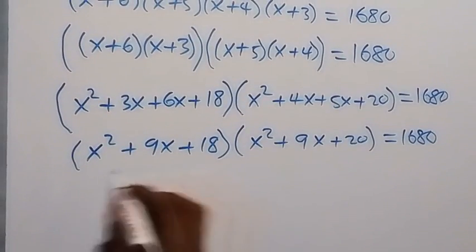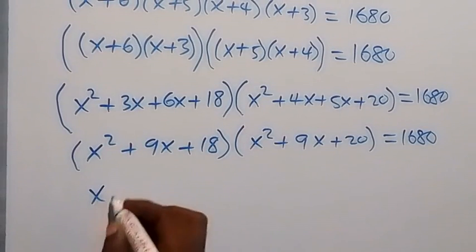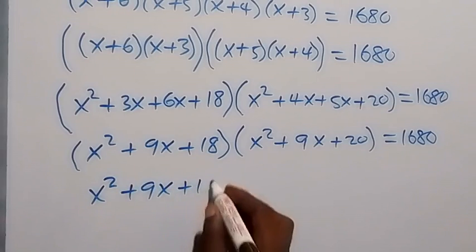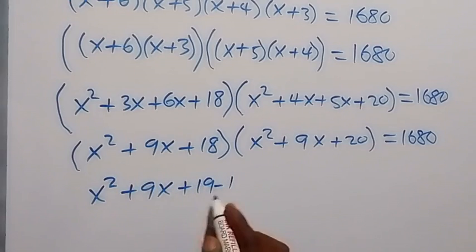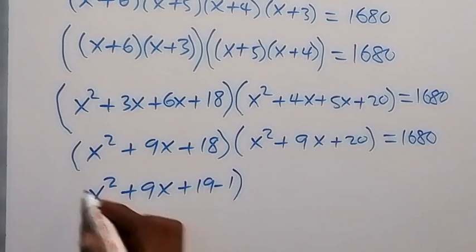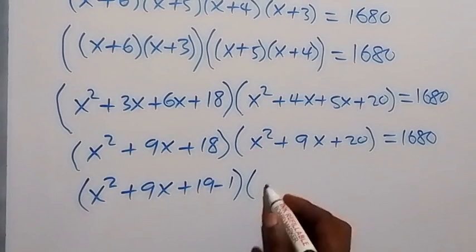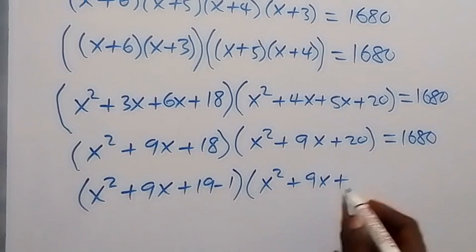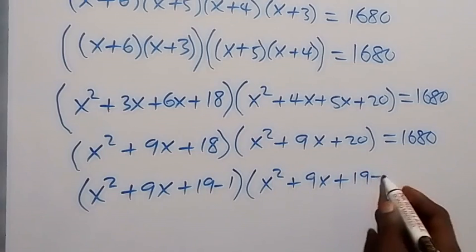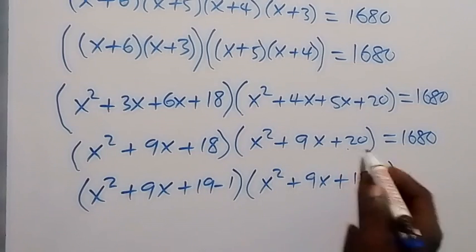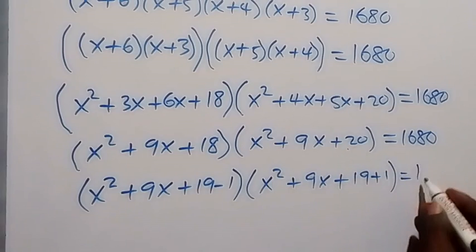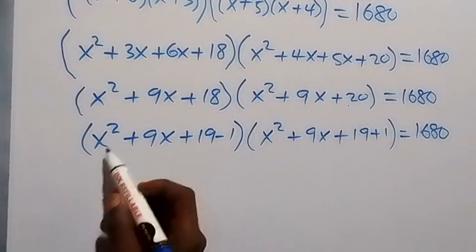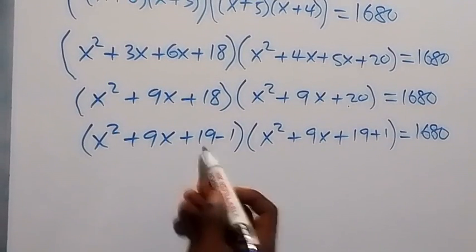We can rewrite the first bracket as (x² + 9x + 19 − 1) and the second bracket as (x² + 9x + 19 + 1), since 19 − 1 = 18 and 19 + 1 = 20. We notice that x² + 9x + 19 is common in both.